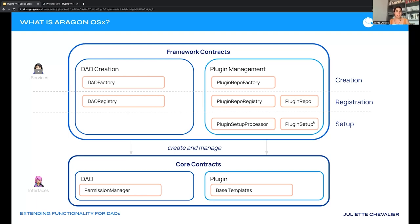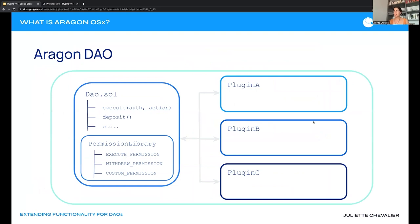The plugin setup processor installs a specific version into a DAO. Installing is really just granting permissions for the DAO to execute the plugin's actions. What connects everything together is the permissions that each contract or person has to execute actions across the DAO.